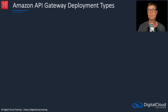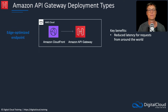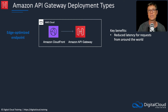There are different deployment types for APIs. We have the edge-optimized endpoint, which will give you reduced latency for requests coming from large parts of the world because it's actually sitting behind Amazon CloudFront — utilizing the CloudFront edge locations and the CDN capabilities of CloudFront.